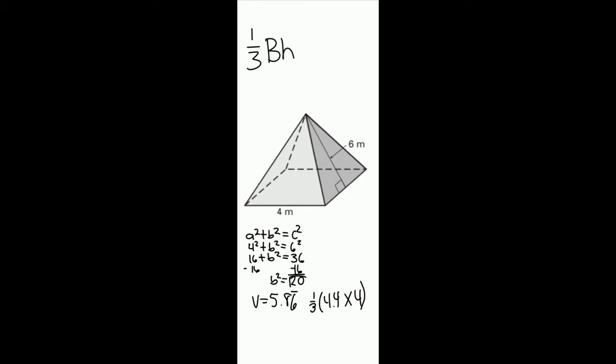Subtract both sides by 16 and you get b² equals 20. Find the square root of 20 and you get 4.4. Now that we have the height,